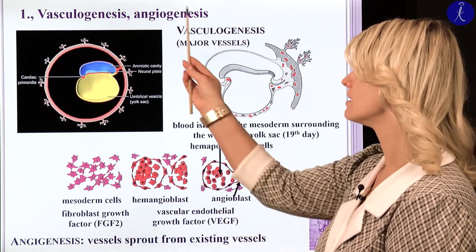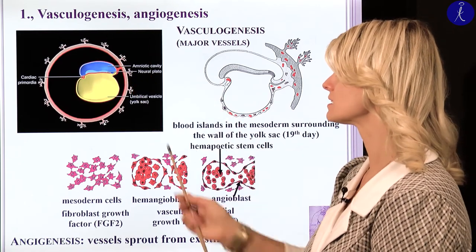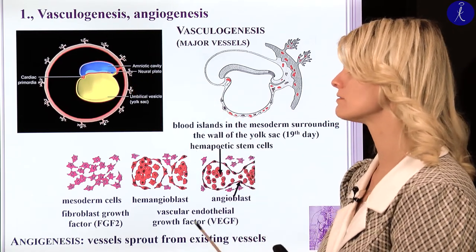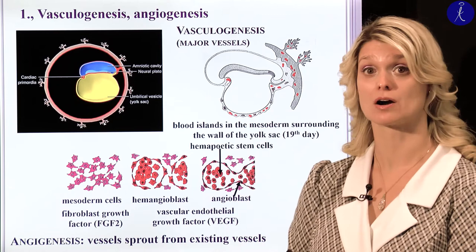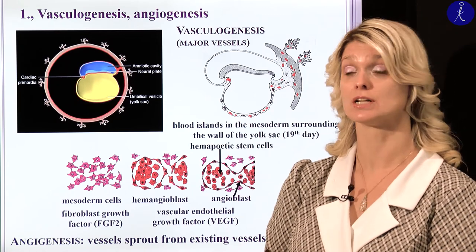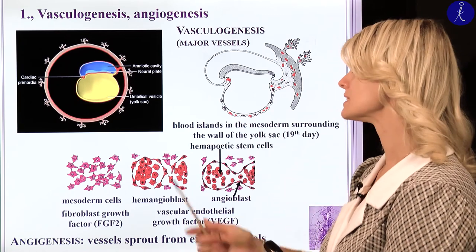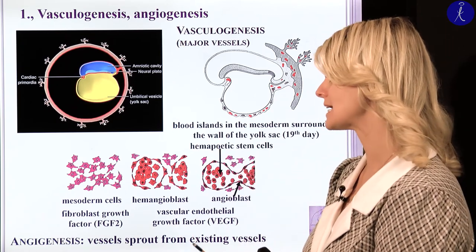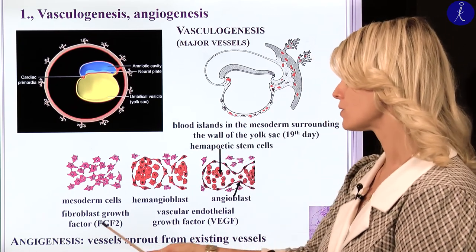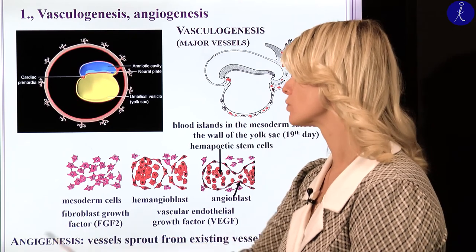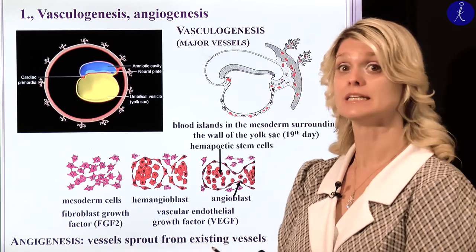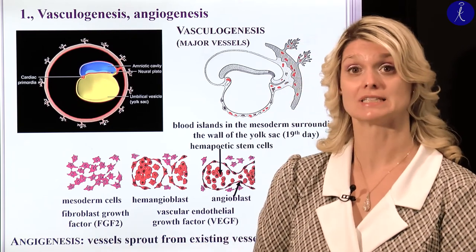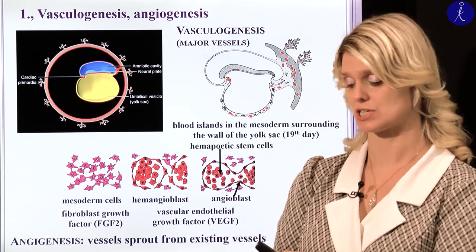The main vessels — the aorta, ventral dorsal aorta, pharyngeal arteries — they develop via vasculogenesis, and all of the smaller branches will develop via angiogenesis.